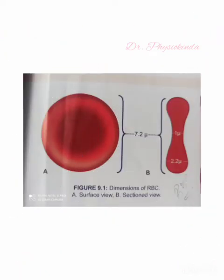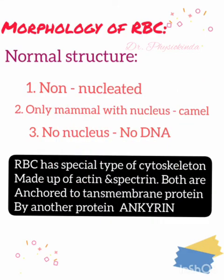This is how a red blood cell looks: the first image is a surface view and the second is a sectional view. Regarding normal structure, RBCs are non-nucleated, and the only mammal whose RBCs have a nucleus is the camel. Since RBCs are non-nucleated, they also lack DNA. RBCs have a special type of cytoskeleton made up of actin and spectrin, both anchored to transmembrane proteins by another protein named ankyrin.